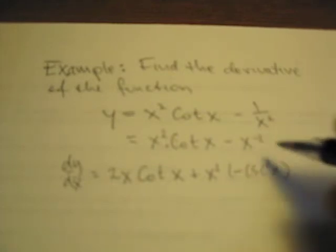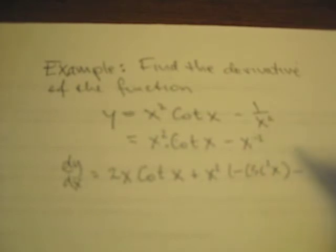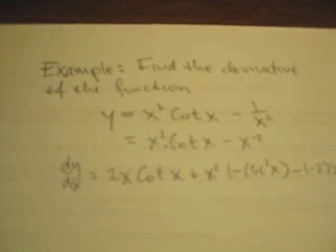Now, we next now have to find the derivative of x to the negative 2. We bring the negative 2 down as the power rule, x to the negative 3 when we take 1 off of the exponent.